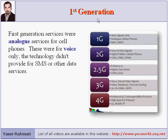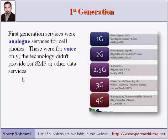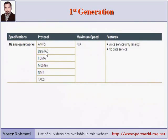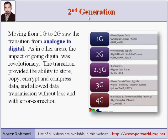1G, or first generation. First generation services were analog services for cell phones. These were for voice only. The technology didn't provide for SMS or other data services. AMPS, DataTAC, FDMA, Mobitex, NMT, and TACS are the protocols of this generation. The features, as mentioned, are analog voice services with no ability for data services.